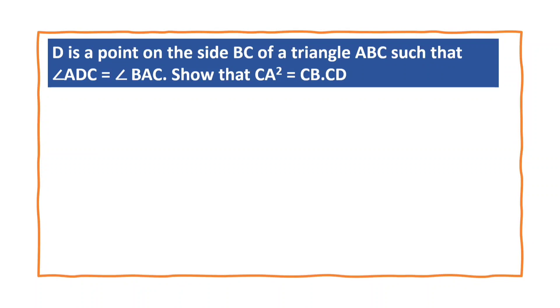D is a point on the side BC of triangle ABC such that angle ADC is equal to angle BAC. Show that CA square is equal to CB into CD.